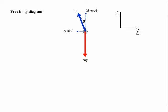Resolving the forces vertically and radially, first vertically, in the z direction, the equation of motion is N cos theta minus mg equals zero because there is no acceleration in the vertical direction.